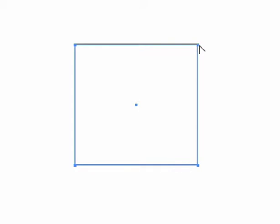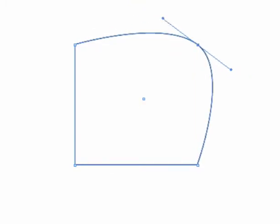If I come over a point here and drag, I've now turned a corner point into a smooth point.